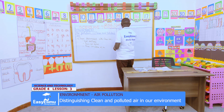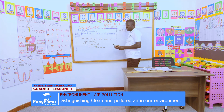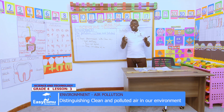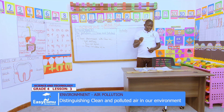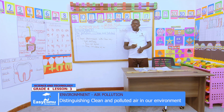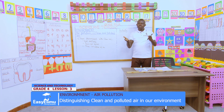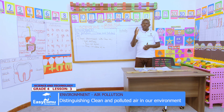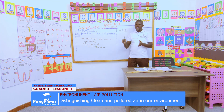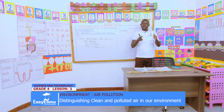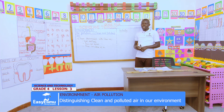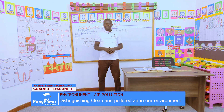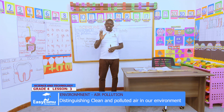An activity for us to do: when you go home, kindly request your parents to assist you with a tablet, phone, or laptop. Keenly identify polluted air — take those photos. Also take photos of clean air, and bring them to class so that we may mount them in our portfolio. Print those photos so we can mount them in the portfolio when you bring them tomorrow. Have a nice time — that marks the end of our lesson, bye-bye!